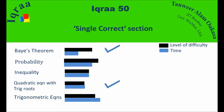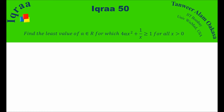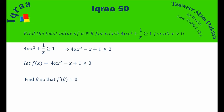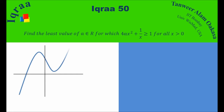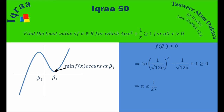The next best scoring problem is the inequality problem. We need the least value of α such that the given expression is greater than or equal to 1 for all positive x. Simplifying gives a cubic expression f(x). Setting f'(β) = 0 gives β = ±1/√(12α). Plotting the function, the minimum occurs at β₁ for positive x. For f(β₁) ≥ 0 we require α ≥ 1/27, so the minimum value of α is 1/27.